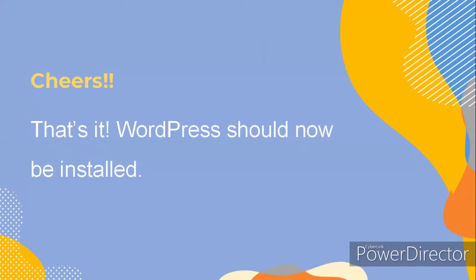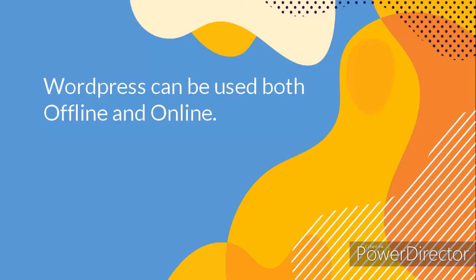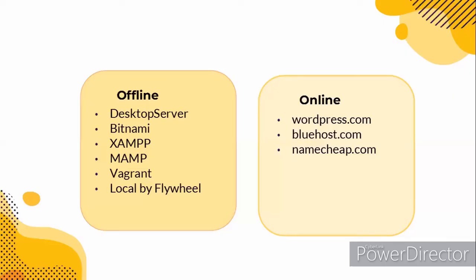WordPress should now be installed on your website. Note that WordPress can be used both offline and online. There are various ways to use WordPress offline, such as through Desktop Server, Bitnami, XAMPP, MAMP, Vagrant, and Local by Flywheel.